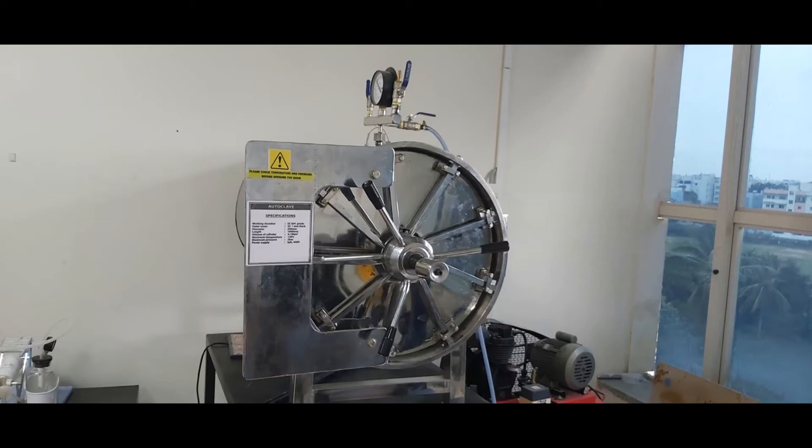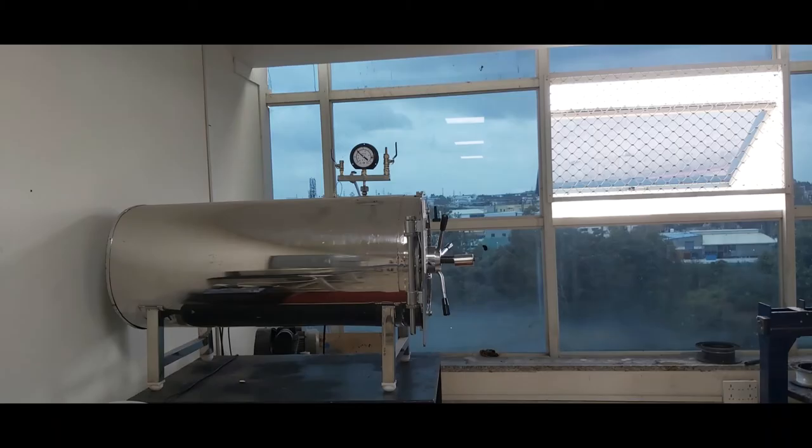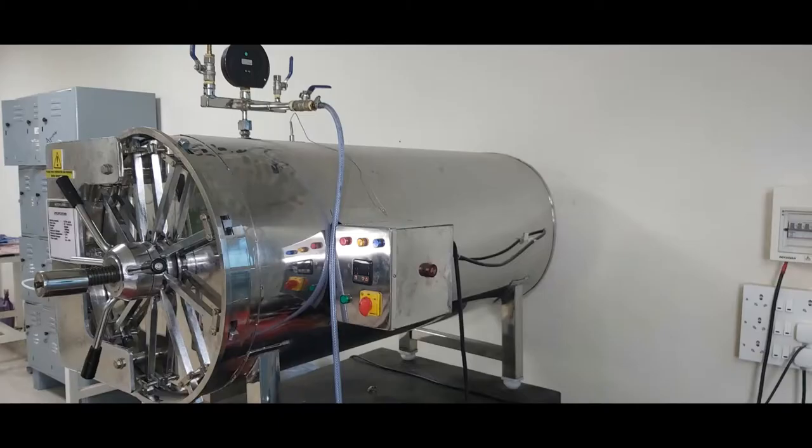Parts processed in autoclave are vacuum bagged to enable the pressure to operate isostatically on the work pieces. In its simplest form, the workload is fully contained inside a loosely fitting bag made of resilient plastic.